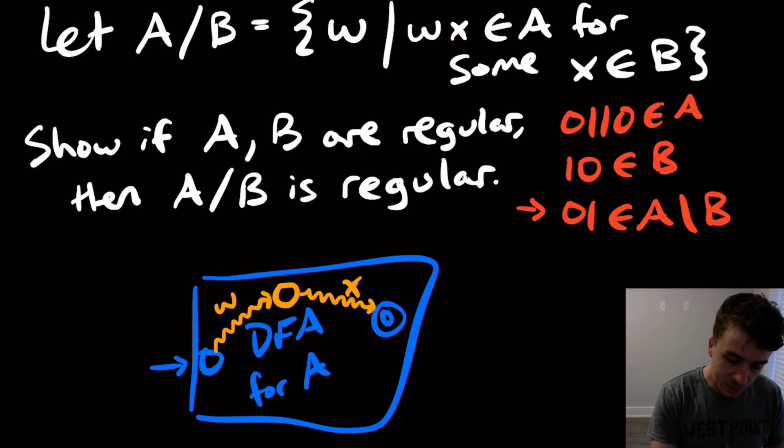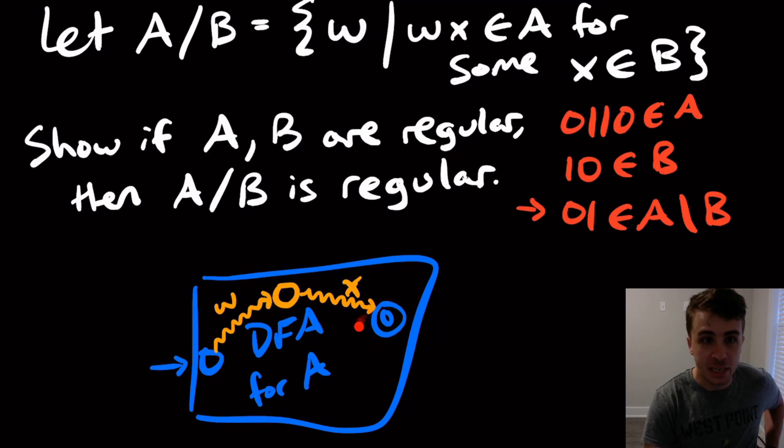So then that means that this string right here we need to chop off in some sense. So that means that this state right here should be a final state. So for this state right here, if there is some way to read any string at all in B that lands in one of the final states here, then that means that we should make this a final state. Because that means that we would have read a string of the form wx, and we're chopping off this last bit right here.